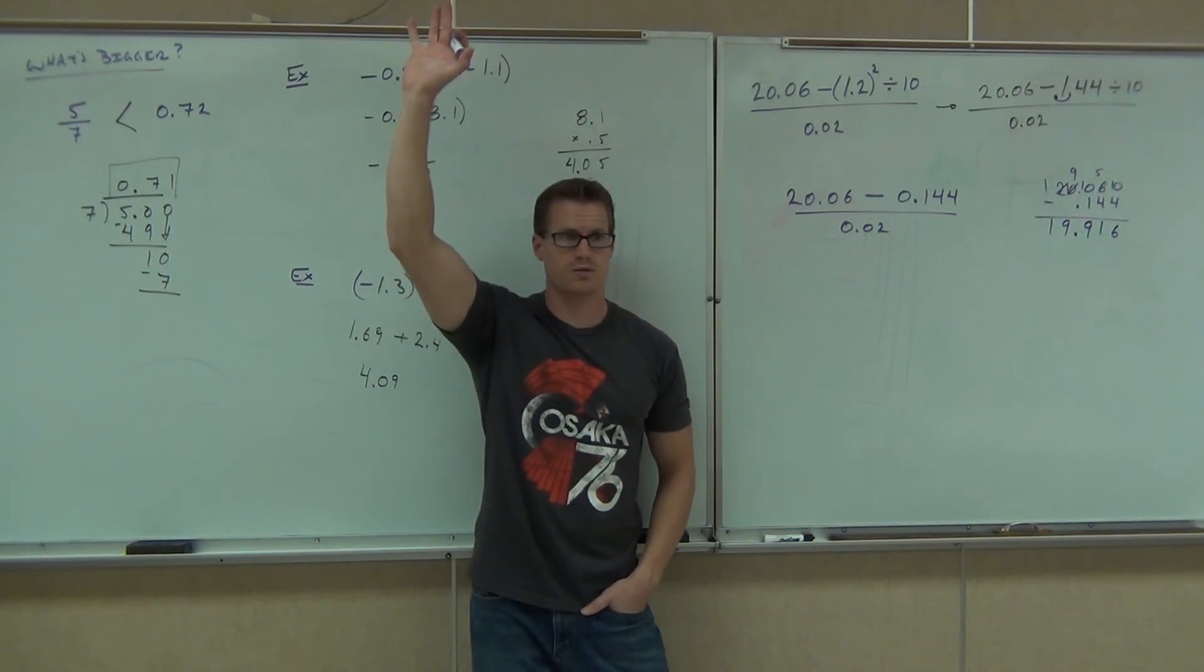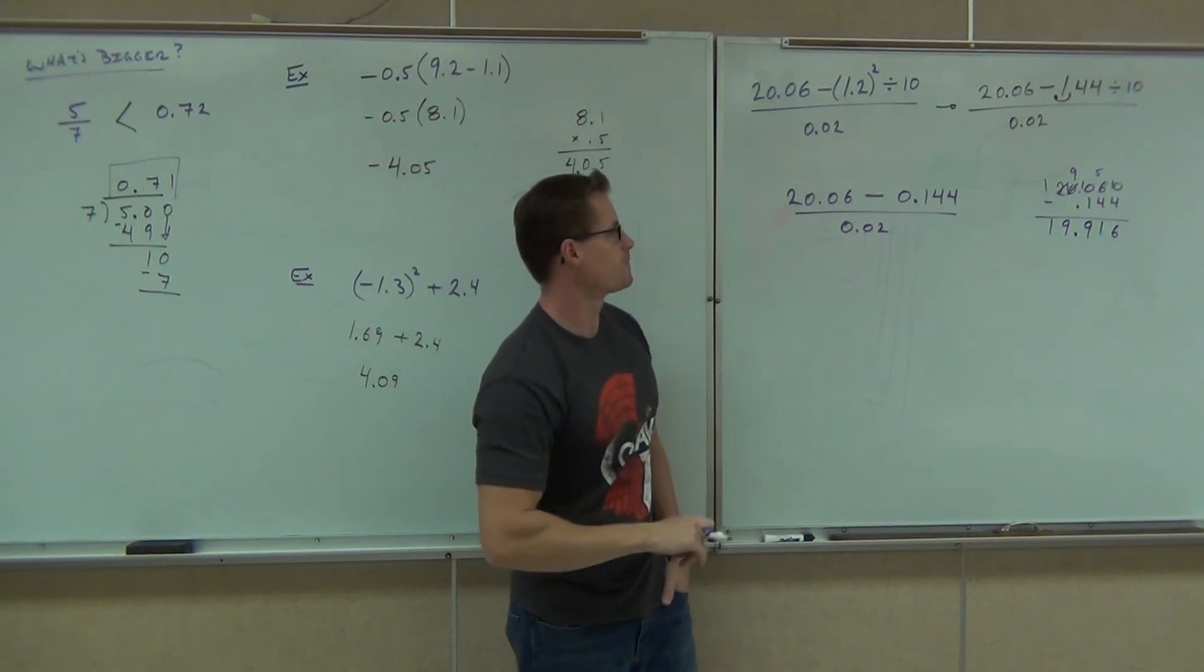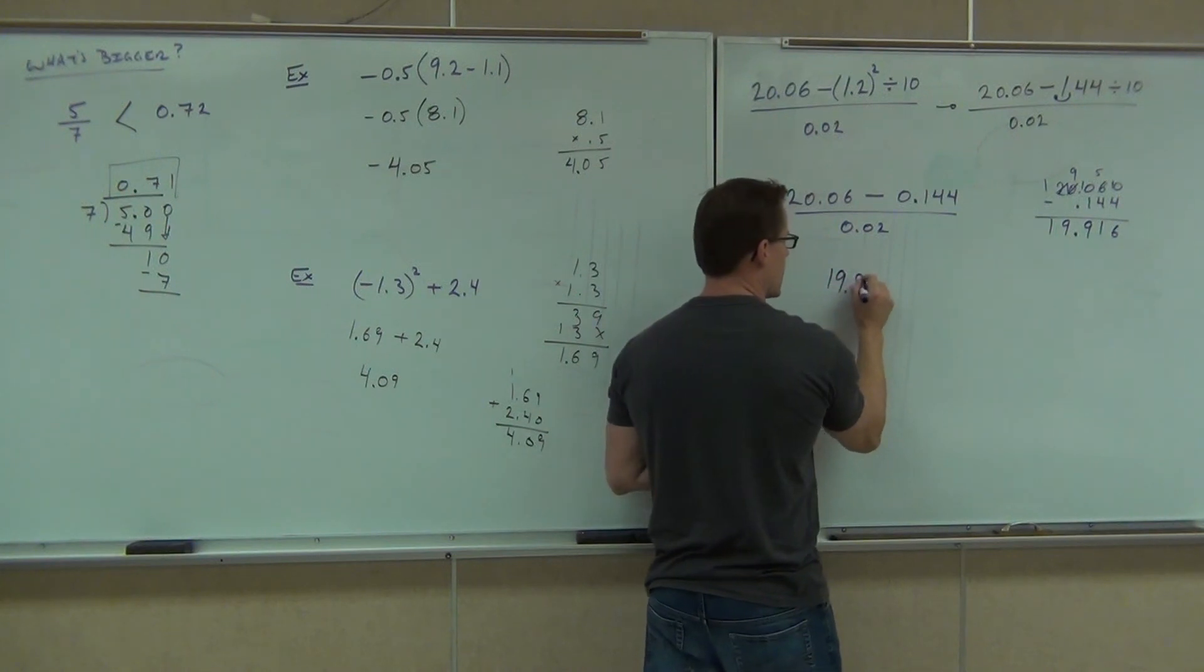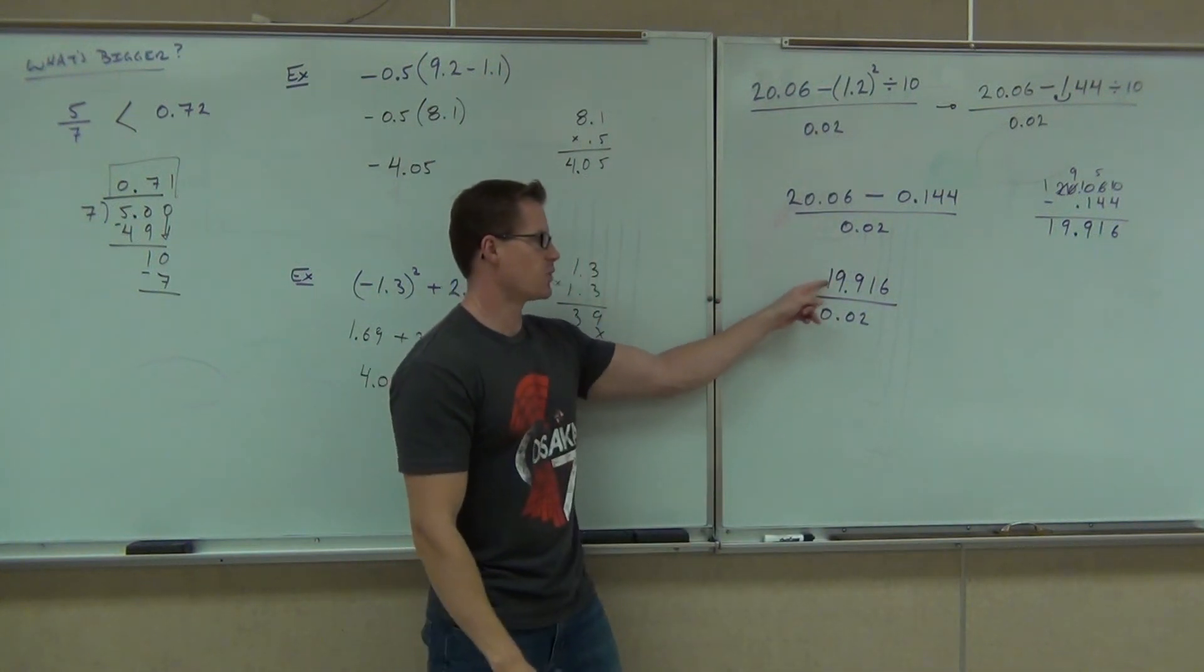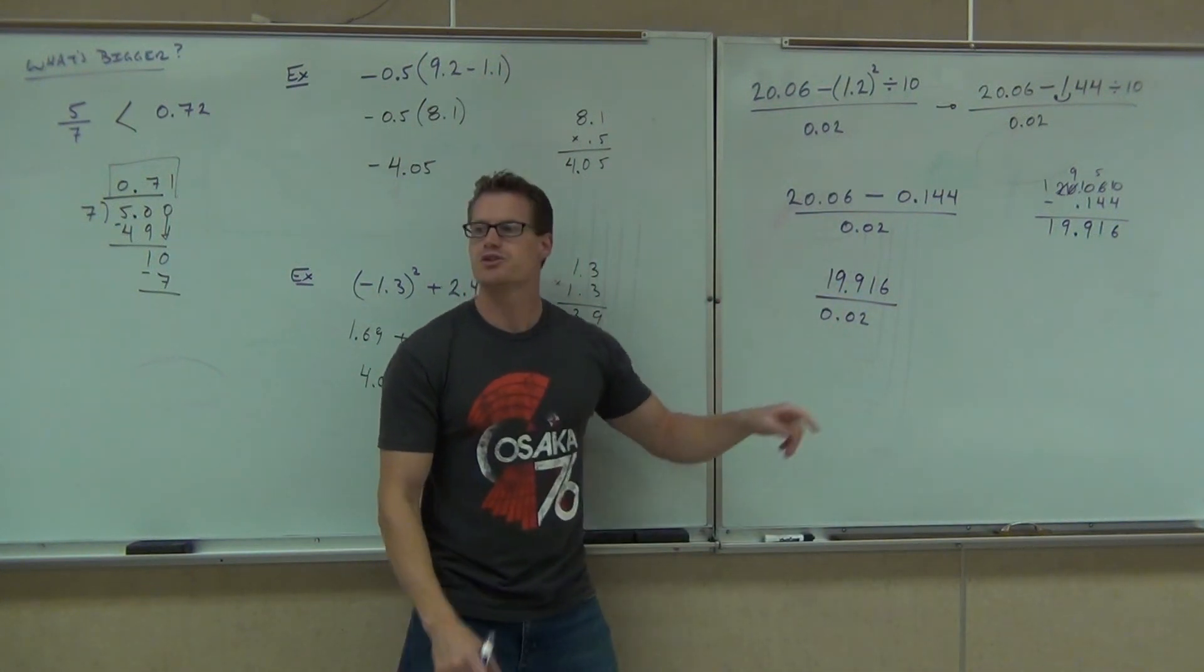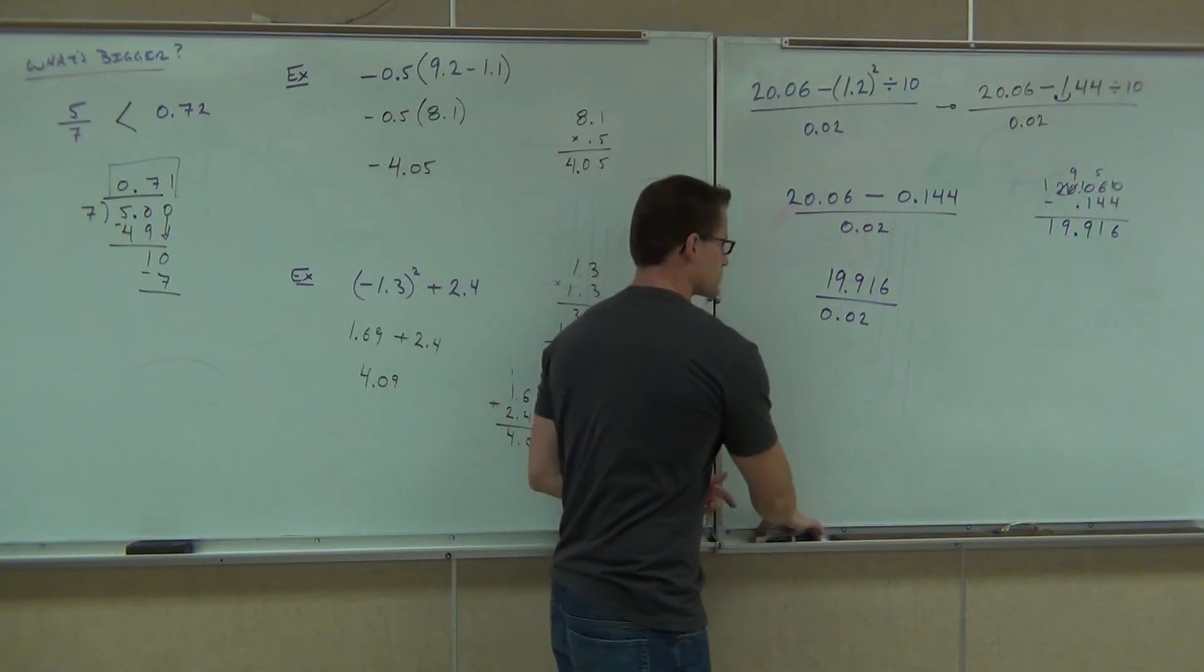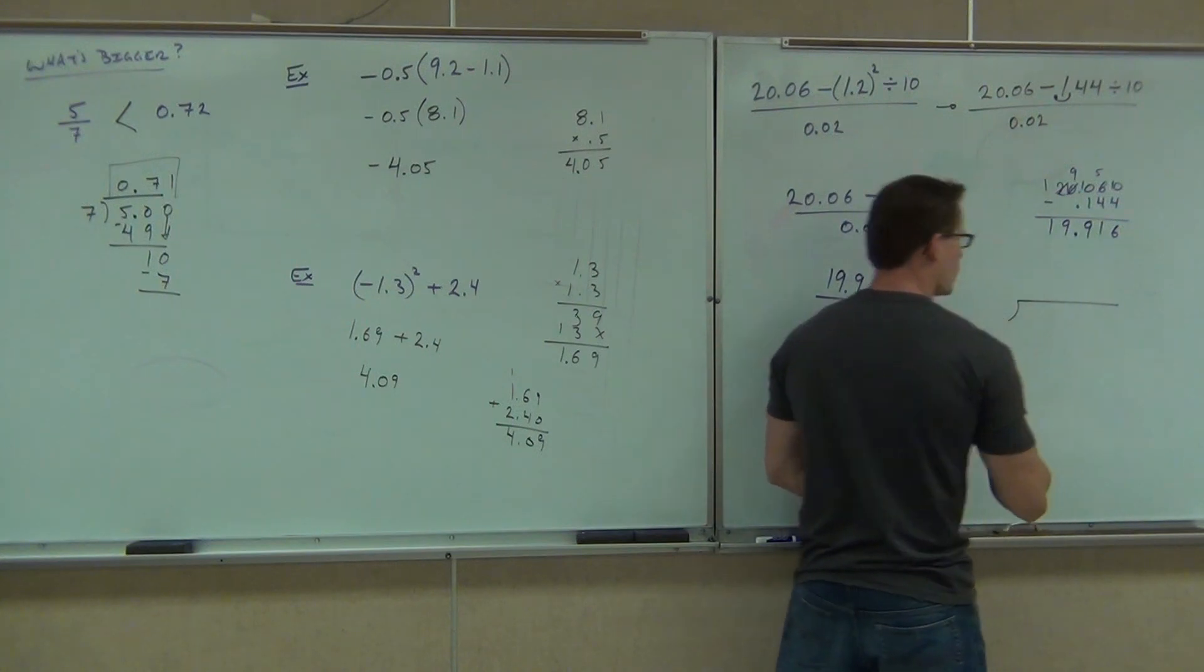Raise your hand if you feel okay with it so far. Okay, I'm assuming if you're not raising your hand, you don't really feel okay with it. Are you okay with it? Okay, good. So our numerator right now is 19.916. Our denominator is 0.02. What's it mean when I have a fraction, 19.916 over 1? So set up your division problem. What goes on the inside?